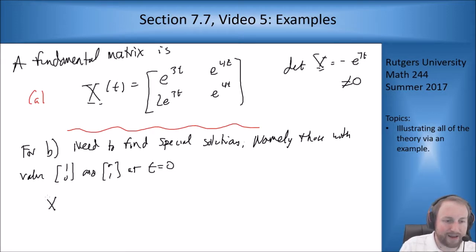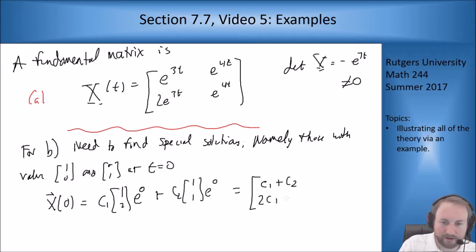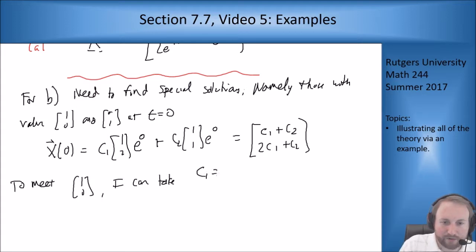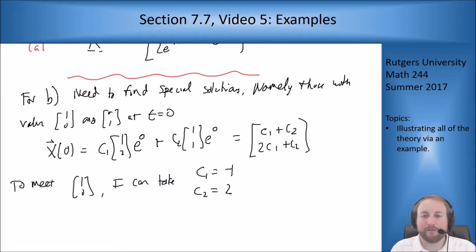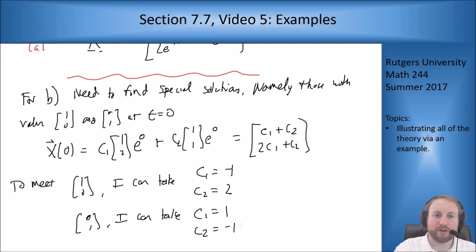Evaluating the general solution at t equals 0 gives x(0) = c1 [1,2] + c2 [1,1] = [c1+c2, 2c1+c2]. To meet the initial condition [1, 0], I take c1 equals -1 and c2 equals 2. To meet [0, 1], I take c1 equals 1 and c2 equals -1.